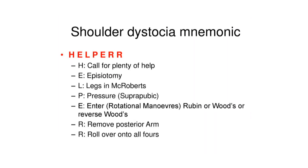The management of shoulder dystocia is based on the mnemonic HELPERR: H for call for plenty of Help, E for Episiotomy, L for Legs in McRoberts position, P for Pressure — applying suprapubic pressure, E for Enter rotational maneuvers which include the Rubin, Woods, or Reverse Woods maneuver, R for Remove the posterior arm, and the final R for Roll the patient onto all fours.